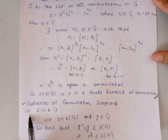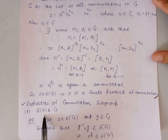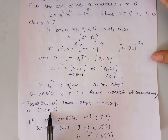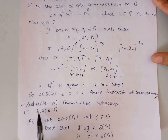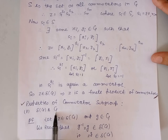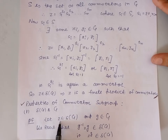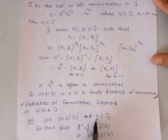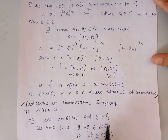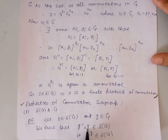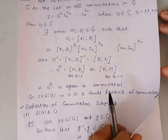The first property is that the commutator subgroup of the group G is a normal subgroup of G. In order to prove that this is a normal subgroup of G, let us take an element Z belonging to this commutator subgroup and one element G belonging to the group G. We are to prove, by definition of normality, that G⁻¹ZG should be an element of the derived subgroup. So let us consider G⁻¹ZG.